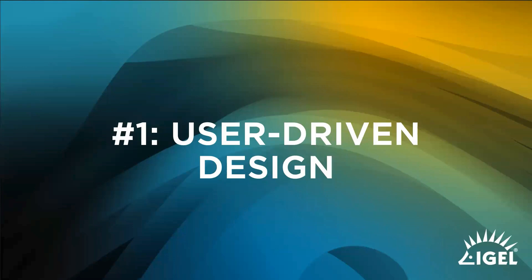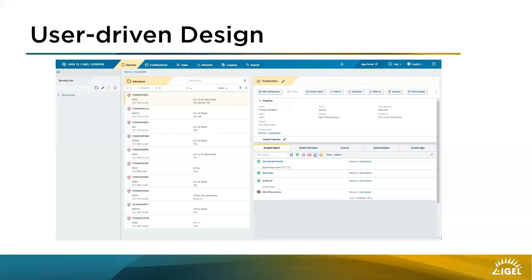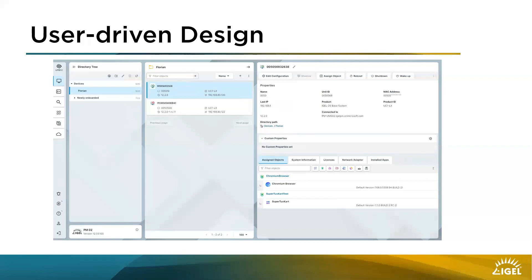OS 12 and the app portal will follow next year. This is how the UMS web app UI looks now, and this is our new design — a lightweight and friendly design, very optimized for daily work. We shifted the menu bar to the left side because screens are getting wider and wider, not higher. We wanted to give you more space by shifting the menu bar to the left-hand side. The directory tree remains on the left, objects in the middle, and details on the right-hand side.